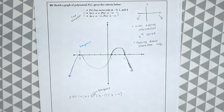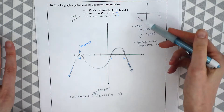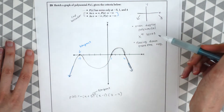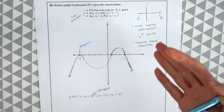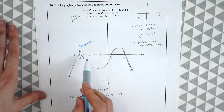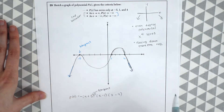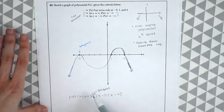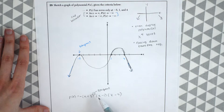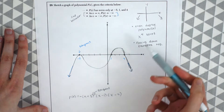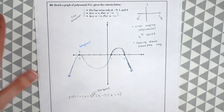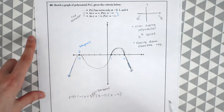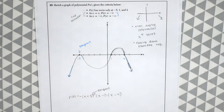There are a lot of aspects to think about: the end behavior, the degree, whether the graph is facing up or down, making sure it hits all the zeros, and being aware of any tangents based on the degree value. In this case we had to add one zero by doubling a factor, but that's our answer.